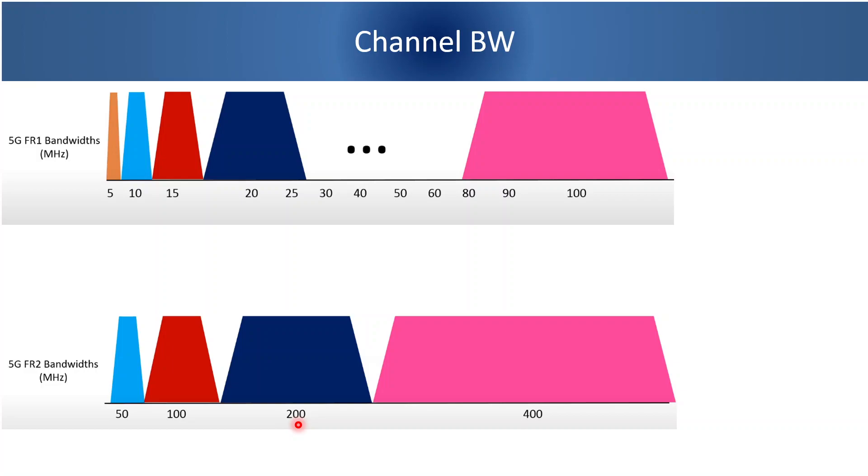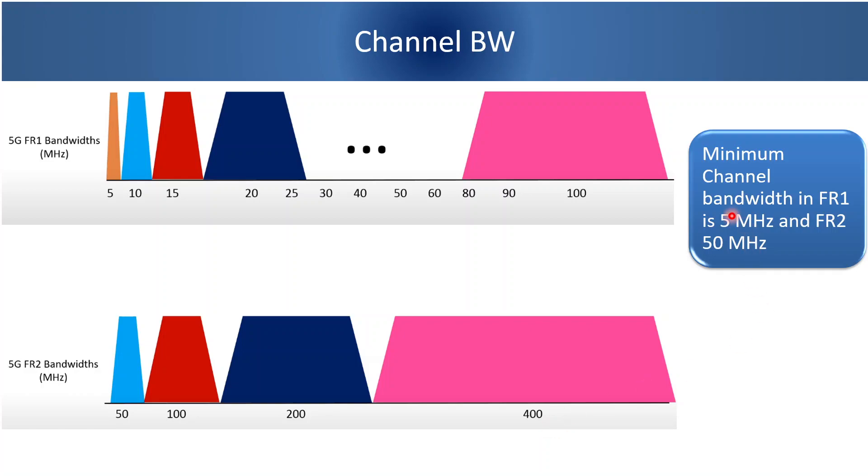200 MHz and up to 400 MHz. In summary, minimum channel bandwidth supported in frequency range 1 is 5 MHz